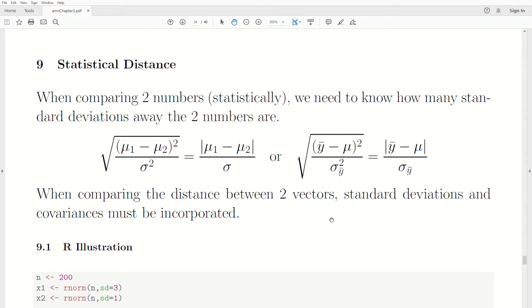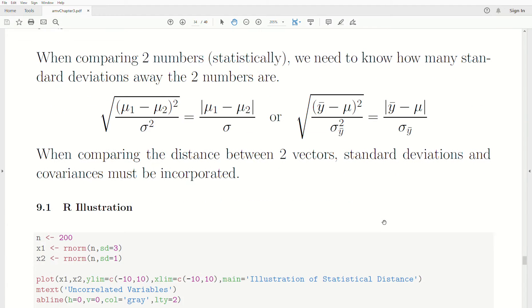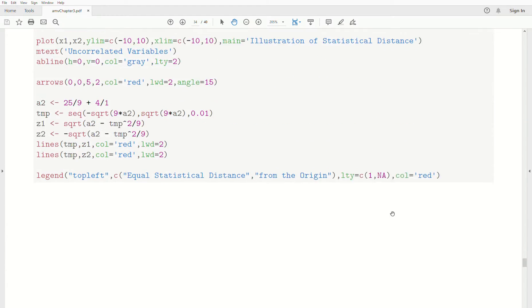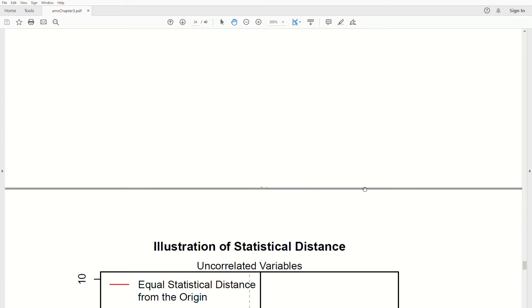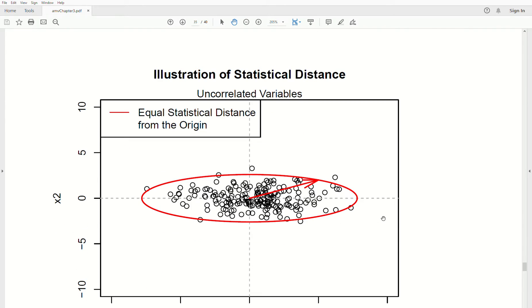But when comparing two vectors, standard deviations and covariances must be incorporated. So there's some added difficulty. And so as an illustration, we won't go through the code, but I'll copy and paste it into the comments as I do every video.